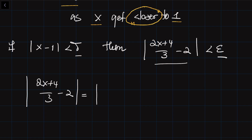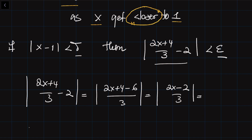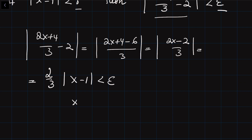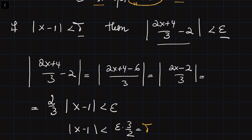This is going to be equal to |(2x+4-6)/3|, which equals |(2x-2)/3|. We can take out 2/3 from the brackets, giving (2/3)|x-1|, and this should be less than epsilon. So if I choose |x-1| smaller than epsilon times 3/2, I can choose delta to be equal to 3ε/2, and then I can control the limit of the function. The key equation is delta equals 3ε/2.